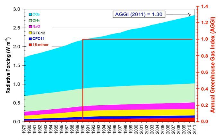Water vapor accounts for the largest percentage of the greenhouse effect, between 36% and 66% for clear sky conditions and between 66% and 85% when including clouds. Water vapor concentrations fluctuate regionally, but human activity does not directly affect water vapor concentrations except at local scales, such as near irrigated fields. Indirectly, human activity that increases global temperatures will increase water vapor concentrations, a process known as water vapor feedback.